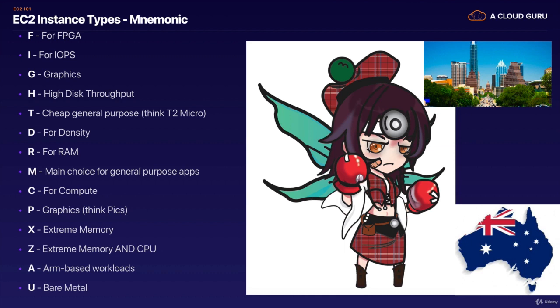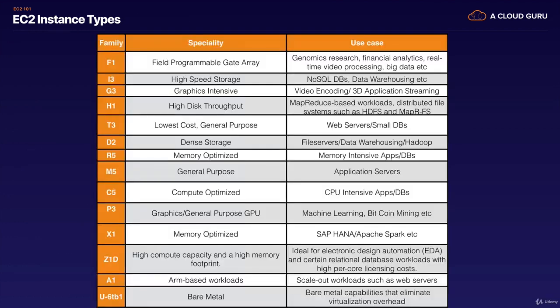Like I said, the instance types aren't really important for the Certified Solutions Architect Associate exam, but they are important when you go on to do the professional certifications. These generation numbers will change throughout the year — an F1 might become an F2, or an R5 might become an R6. The numbers are basically just the generations, so this would be the fifth generation of the memory optimized instance.